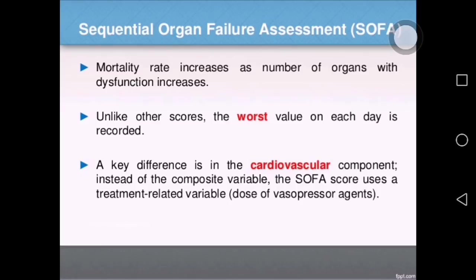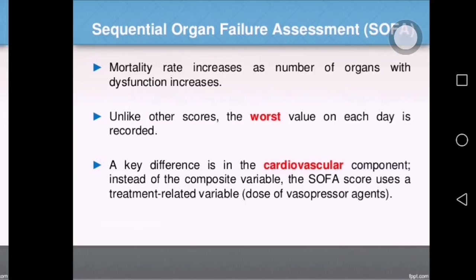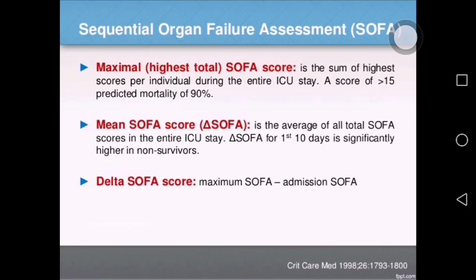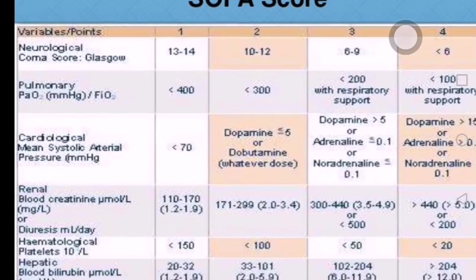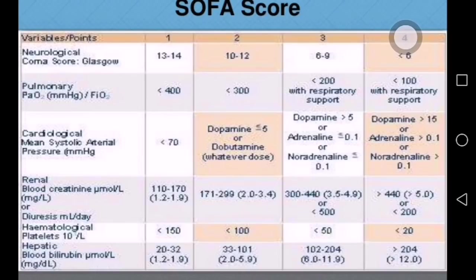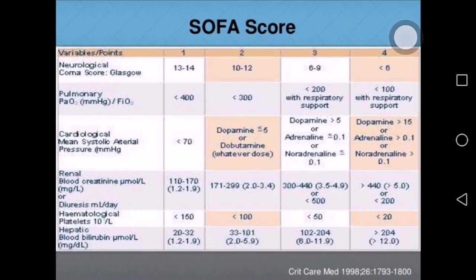Unlike other scores, in SOFA the worst value of each day is noted, and mortality rate increases as the number of organs with dysfunction increases. The maximal SOFA score is the sum of the highest score per individual organ system during the entire ICU stay. The mean SOFA is the average of all total SOFA scores over the entire ICU stay, and delta SOFA is the maximum SOFA score on the admission day. The variables assessed include neurological, pulmonary, cardiovascular, renal, hematological (platelet count), and hepatic (bilirubin).